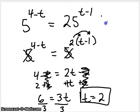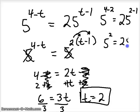So if we go up here and we check it, 5 to the 4 minus 2. Substitute 2 for t. Is that equal to 25 to the 2 minus 1? Well 4 minus 2 is 2, so 5 squared. And 2 minus 1 is 1, so 25 to the first. 5 squared is 25 and 25 to the first is 25. So it checks out. Our missing exponent was 2.